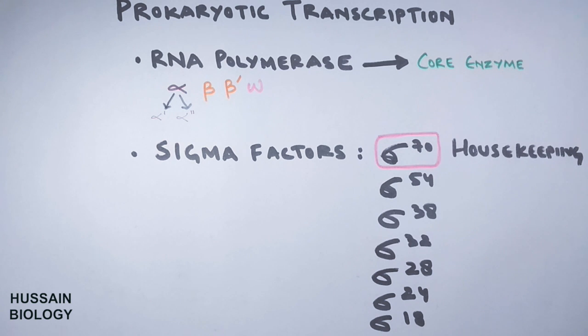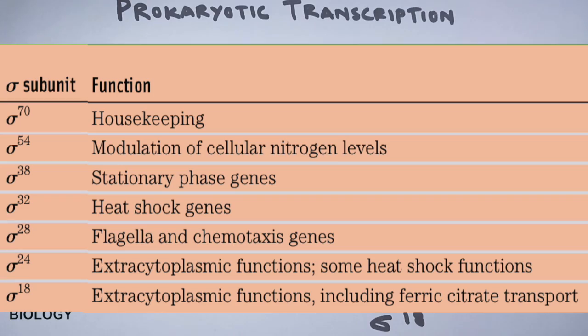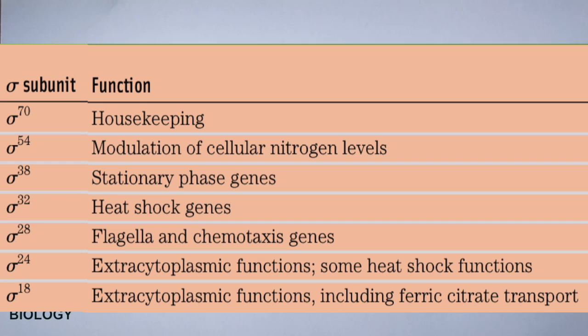The rest of the sigma factors have been shown in the table, which lists the genes they transcribe. For example, sigma 32 transcribes the heat shock genes during stress.